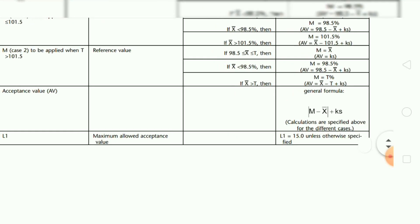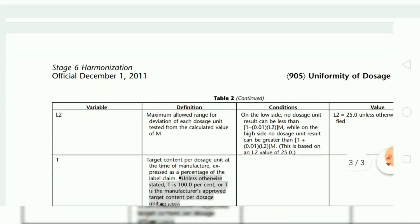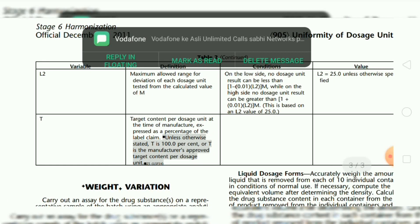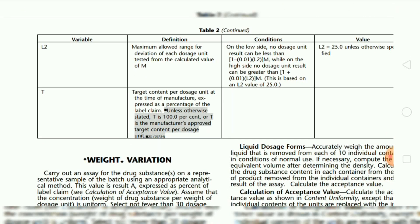If the sample does not comply with L1, then further proceed to L2. L2 is the maximum allowed range for deviation of each dosage unit tested from the calculated value of m. On the low side, no dosage unit result can be less than (1 minus 0.01 L2) times m. On the high side, no dosage unit result can be greater than (1 plus 0.01 L2) times m. This is based on an added value; L2 is equal to 25, unless otherwise expressed.